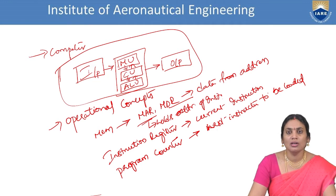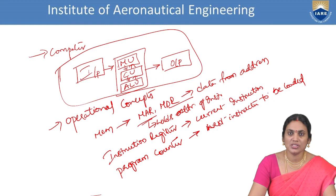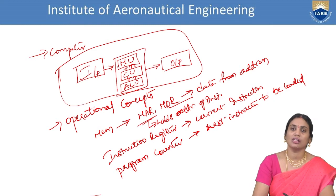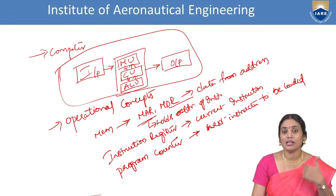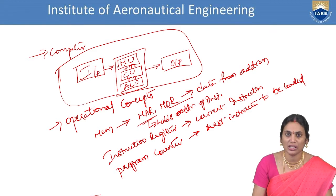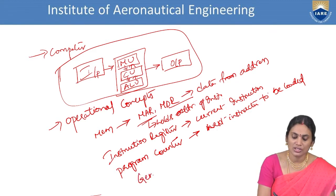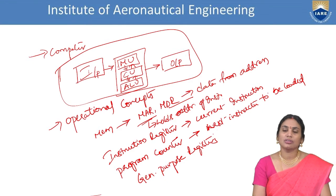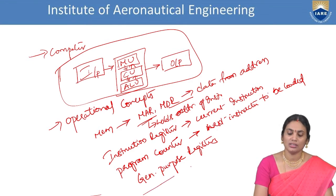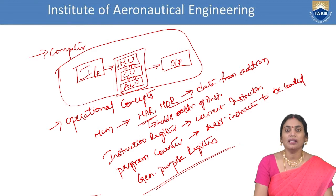For temporary operations — such as looping structures or repeated additions within loops — holding data temporarily is needed. If the data is fetched from memory again and again, it will take too much time. So the control unit uses a special context for these temporary operations, which are called General Purpose Registers. These registers are exclusively used to hold temporary values.